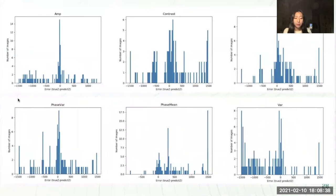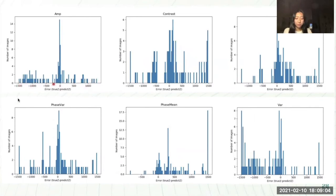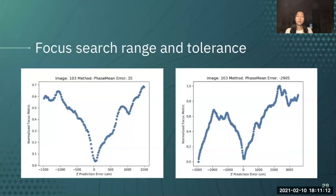We also wanted to look at the error — histograms showing the number of images corresponding to each error, centered around zero, or the true Z. The amplitude method seems to have a pretty sharp peak at the true Z, meaning we're getting a lot of images with zero error, with some standard baseline and a slight skew towards underestimating the Z. We saw with contrast that there's a peak in the middle but also strange peaks towards the high end. This led us to look at the focus search range, and we realized that a lot of our images were incorrectly predicting towards the ends of the focus range, leading us to consider that maybe we need to shorten this range in the future.